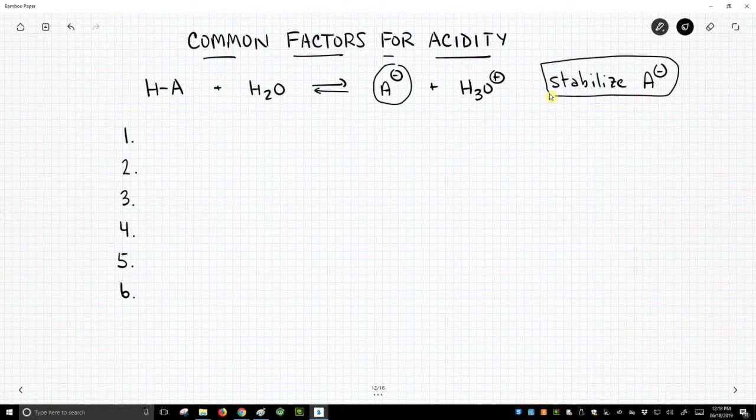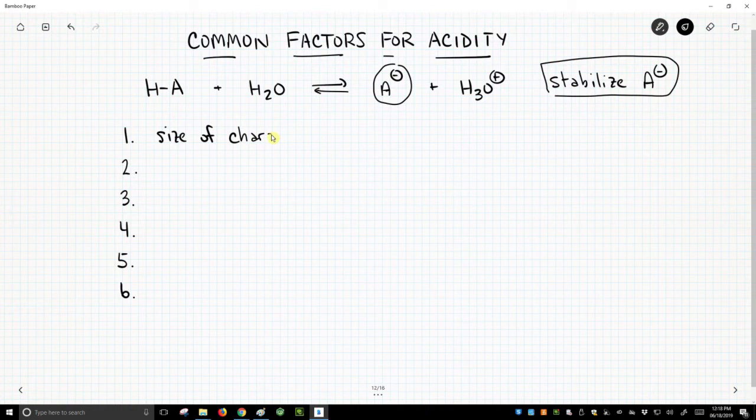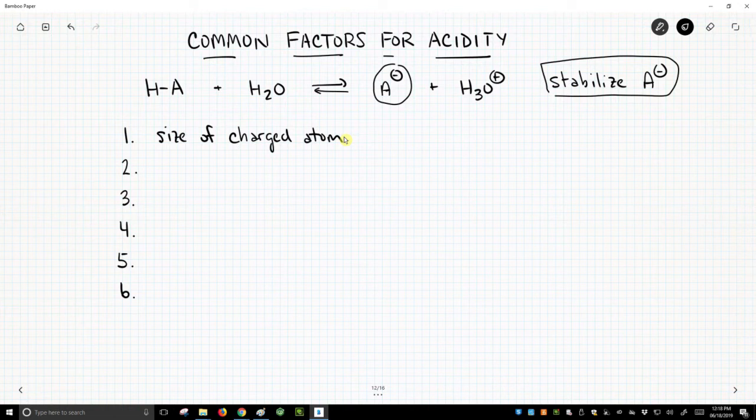So what are those factors? Well, one is the size of the charged atom. Putting the charge on a larger atom results in a more diffuse charge, and that results in a more stable anion. So that's one factor, the size of the charged atom.